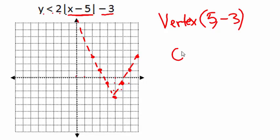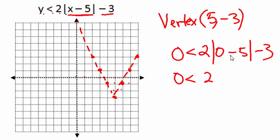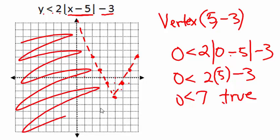So instead of y is less than, I now have 0 is less than 2 times the absolute value of 0 minus 5, then minus 3. Just got to figure out if that's true or false. This is 2 times, let's see, negative 5 inside the bars comes out as 5 when you actually take the absolute value. This will end up with 0 is less than 7. That's a true statement. So since we used a test point outside the V and got a true statement as a result, we should shade all the stuff outside the V for our solution.